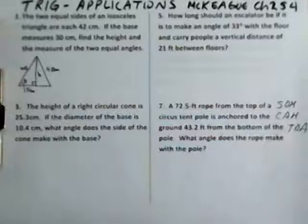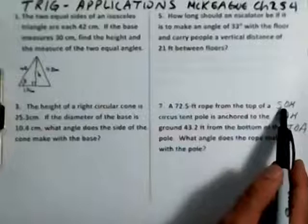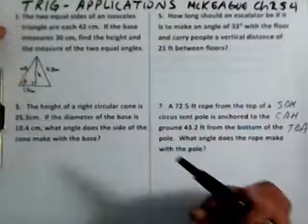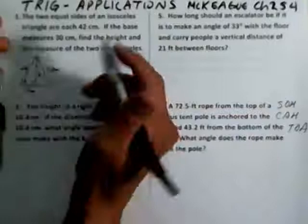Write this down somewhere: SOH-CAH-TOA — that's very, very important. Everybody should know this by now. Sine of the angle is equal to the ratio of the opposite side to the hypotenuse. Cosine of the angle is adjacent over hypotenuse. Tangent of the angle is equal to the ratio of the opposite side to the adjacent side.